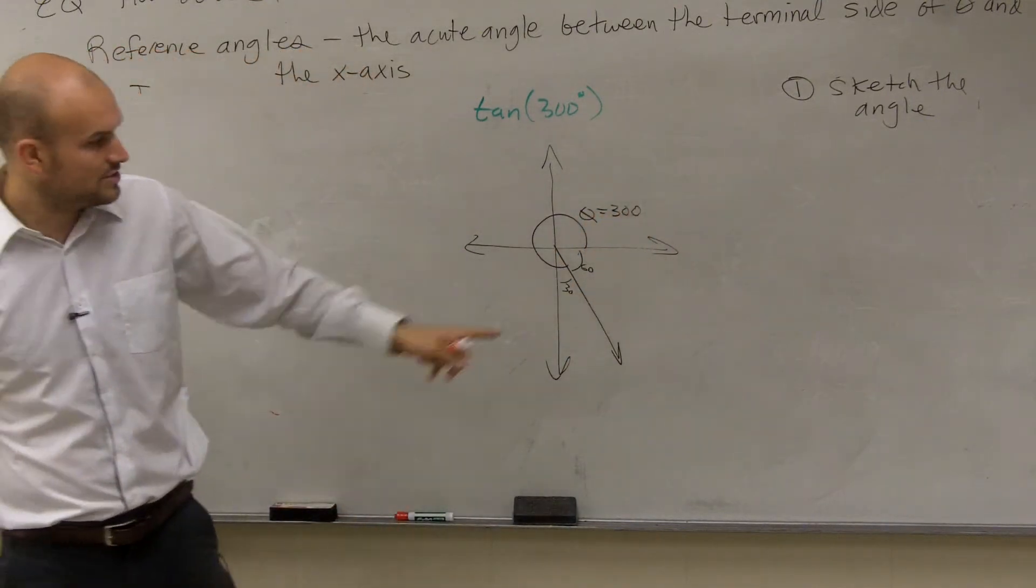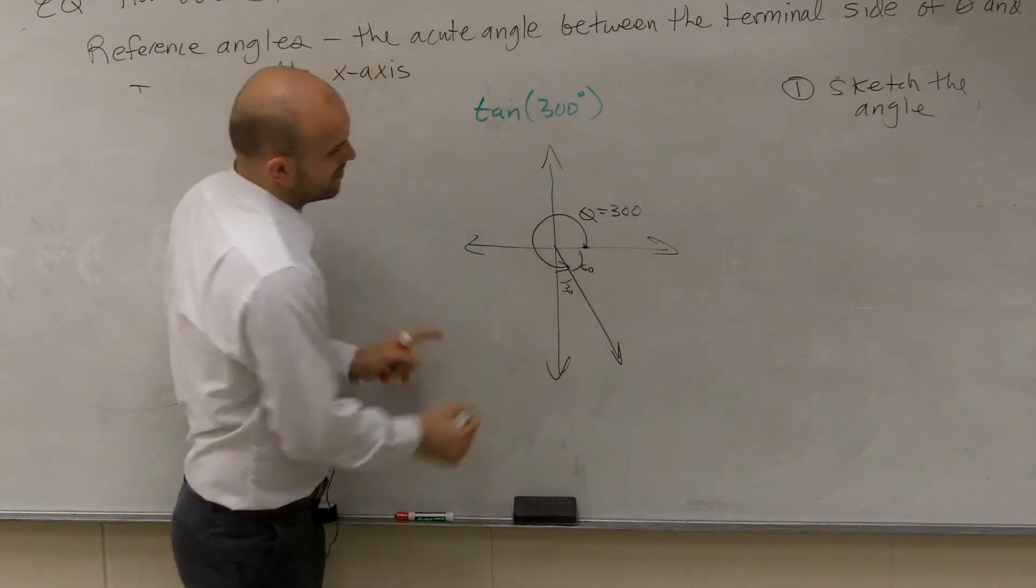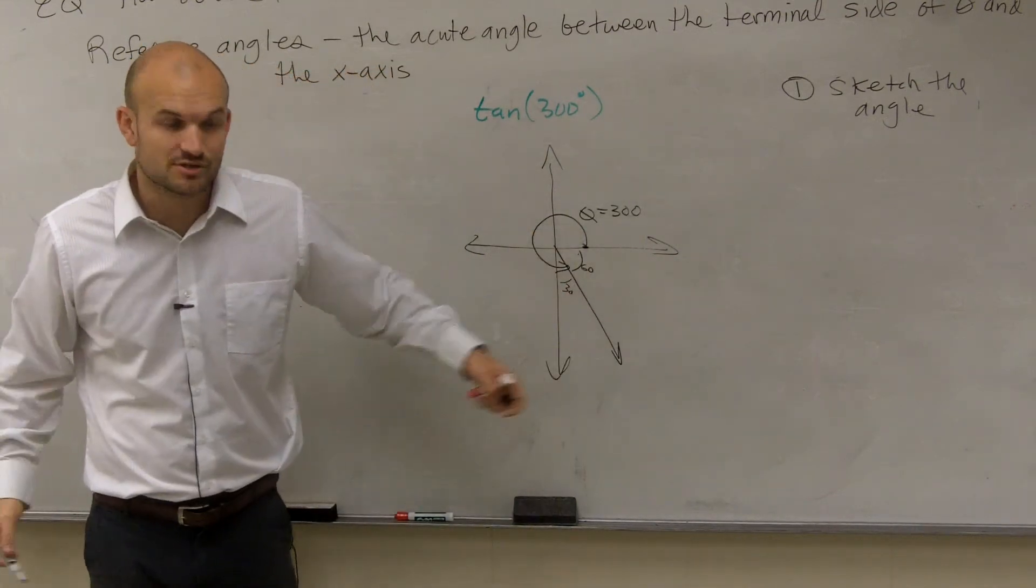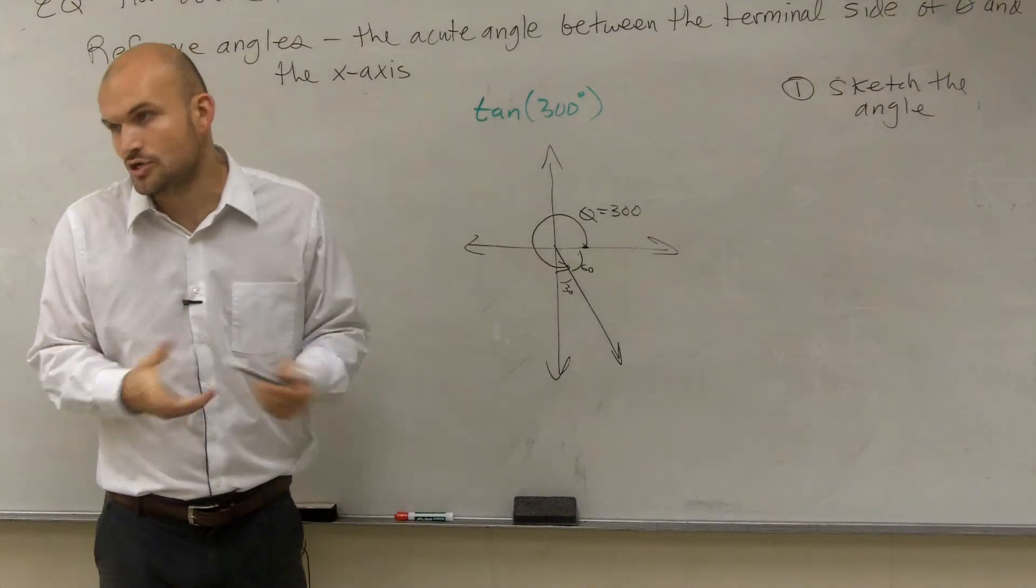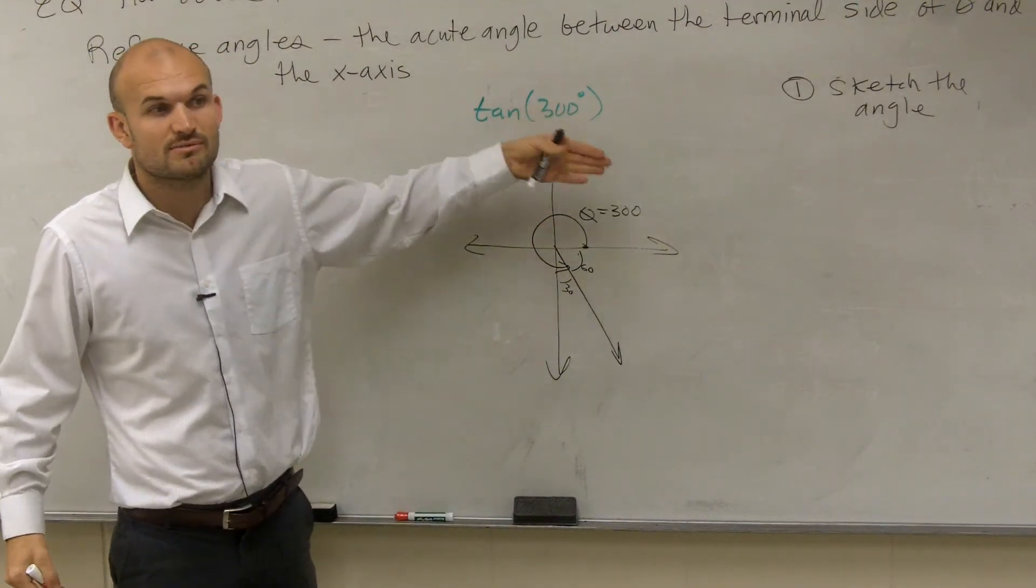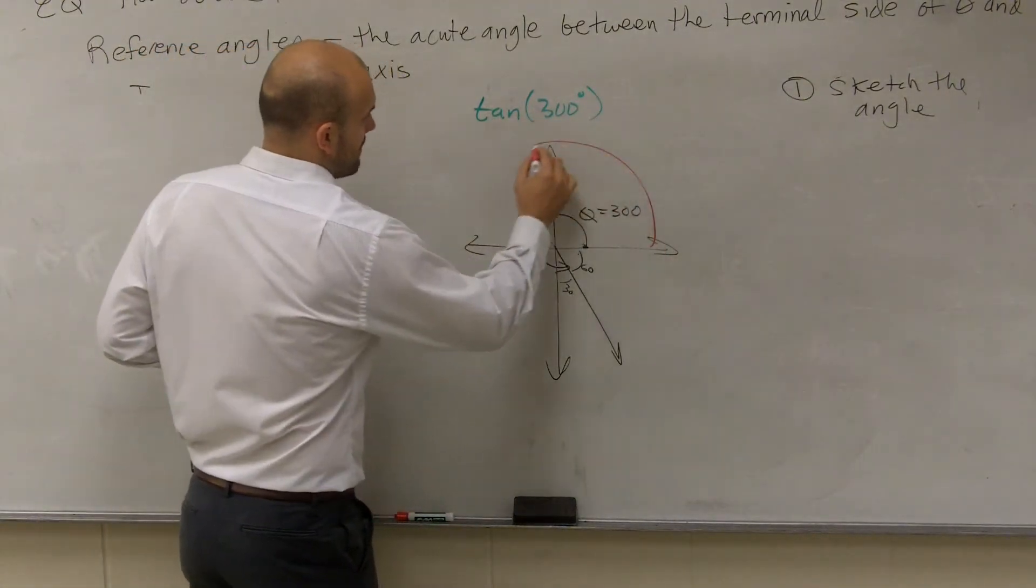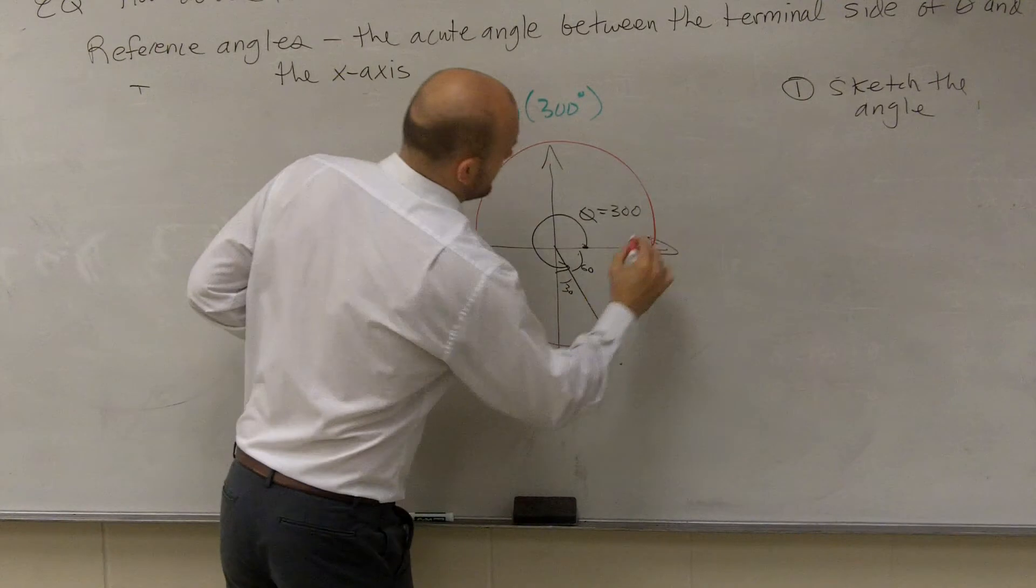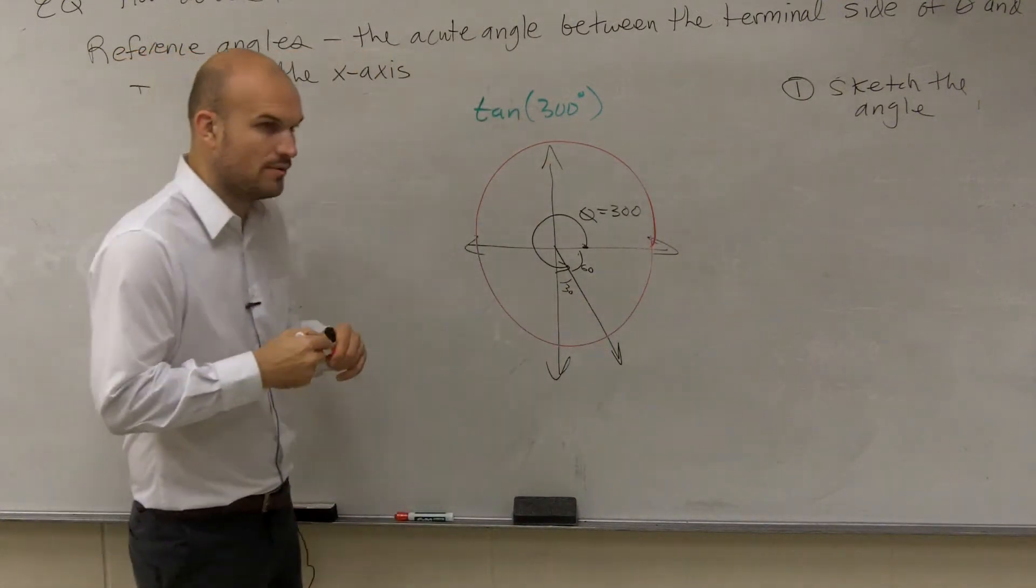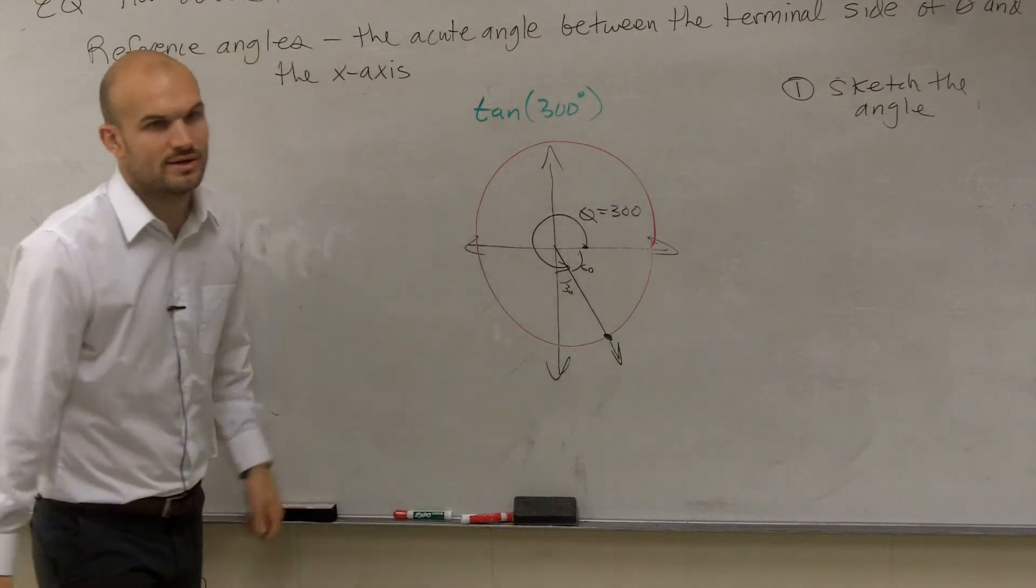Okay, so once you sketched your angle, we started here and we go to there. Then the next thing we were supposed to do is draw the unit circle, because we need to determine, if I want to find the tangent, we need to determine what is that coordinate point. So I'm going to draw my unit circle. And ladies and gentlemen, what we want to do is figure out what is that coordinate point.